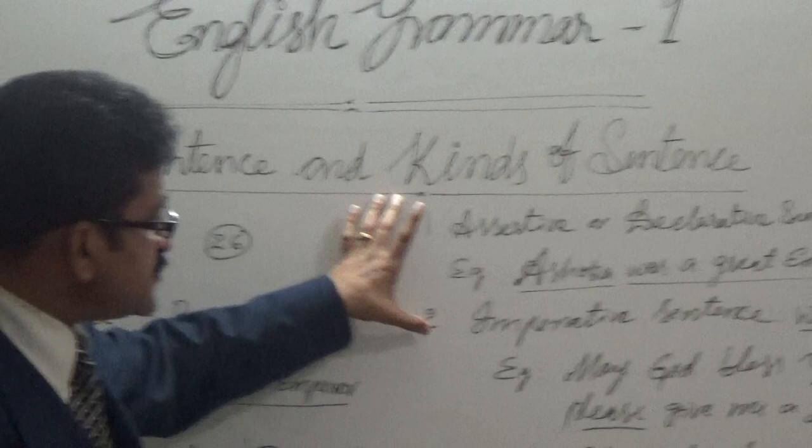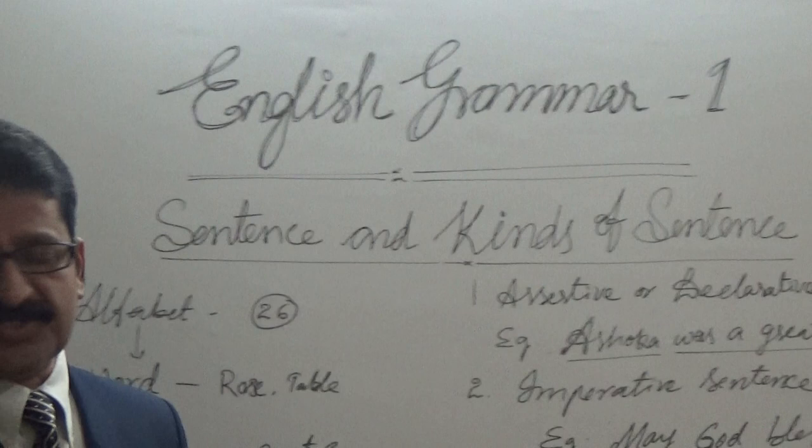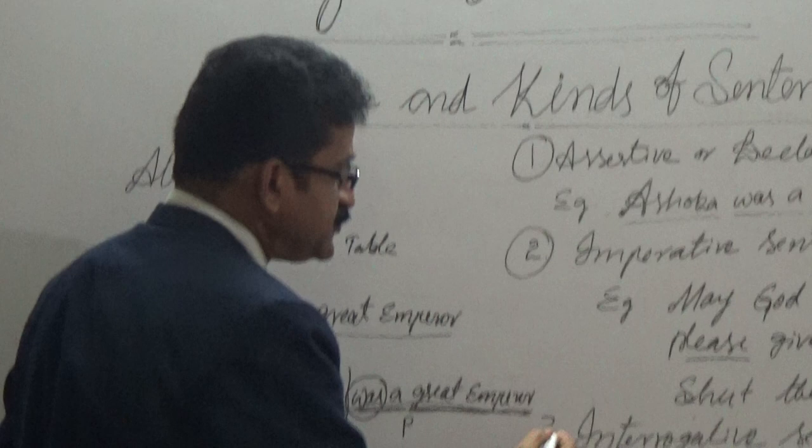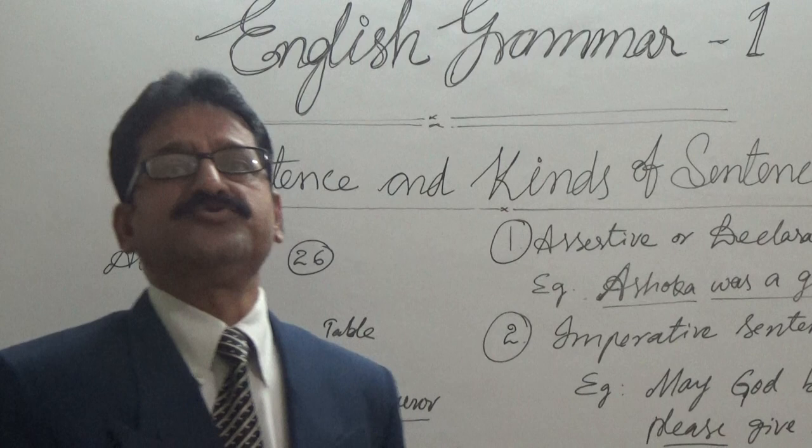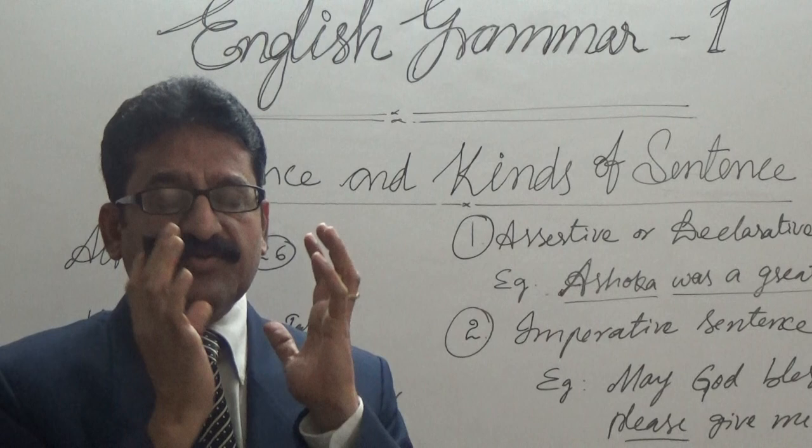So we have four kinds of sentences that we are supposed to understand: first type, assertive; second type, imperative; third type, interrogative; and fourth type, exclamatory. We have to understand these because while we speak, we have to express our feelings exactly.